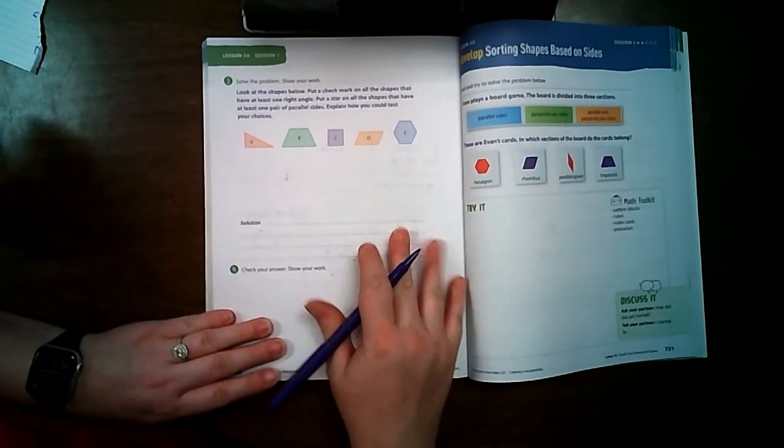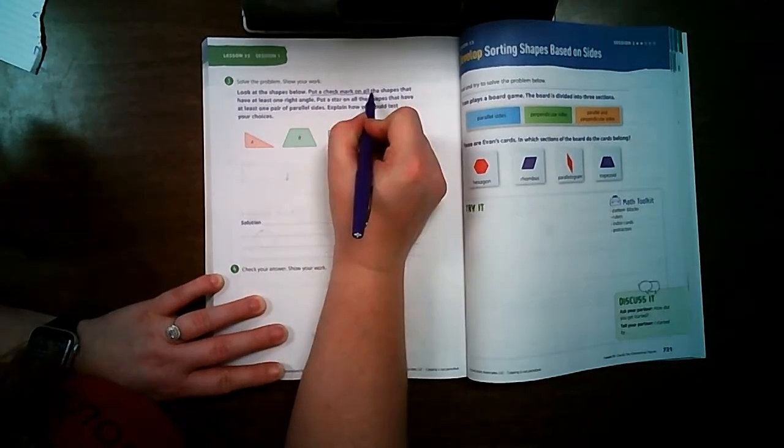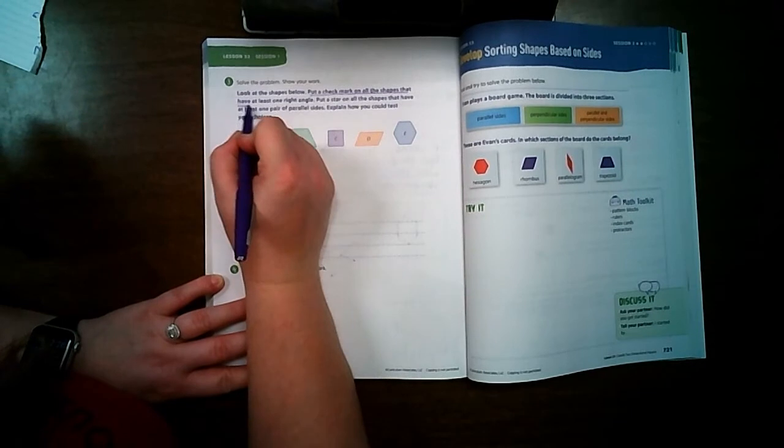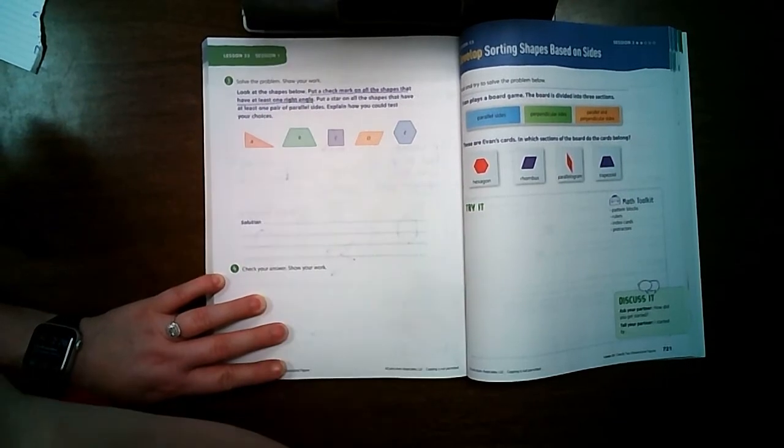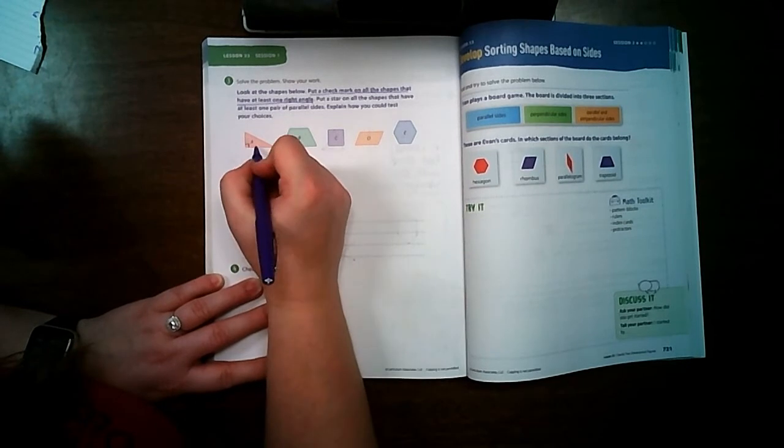Let's turn to page 720. Look at the shapes below. Put a check mark on all the shapes that have at least one right angle. Okay? Right here, this looks like a square. So, we'll put a check.